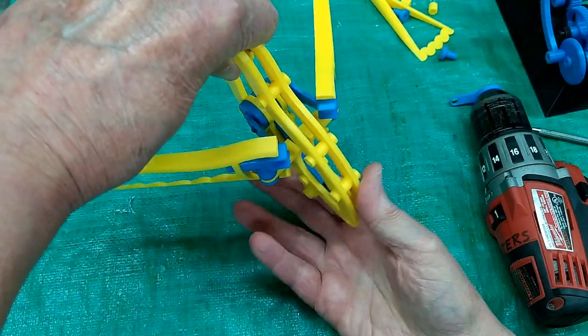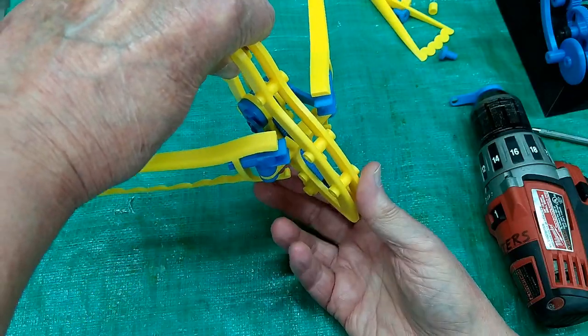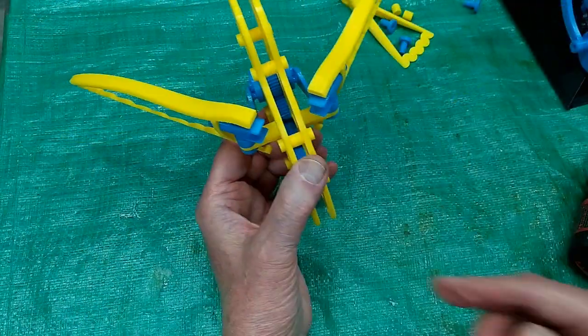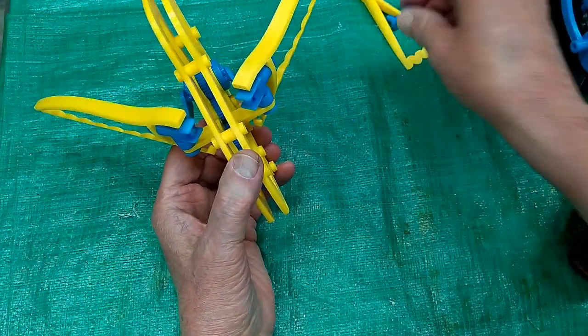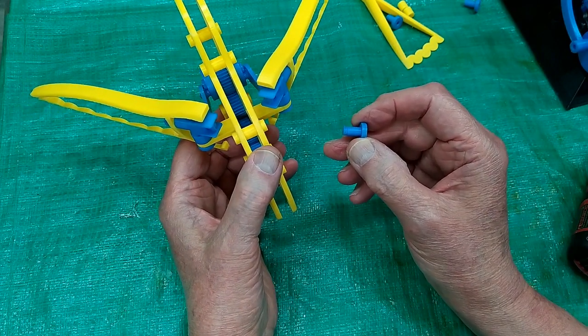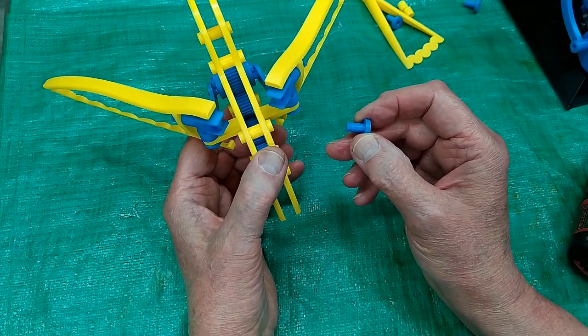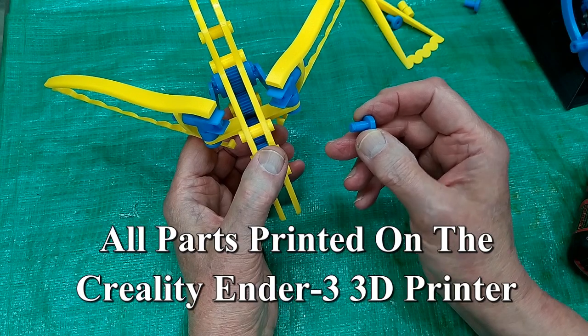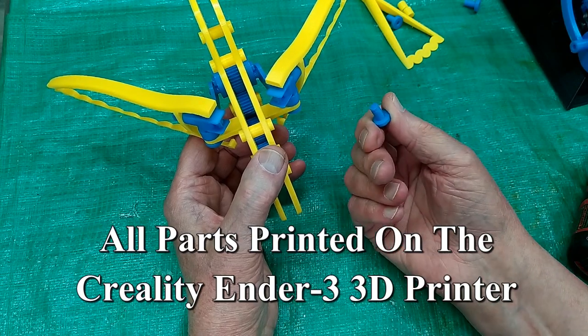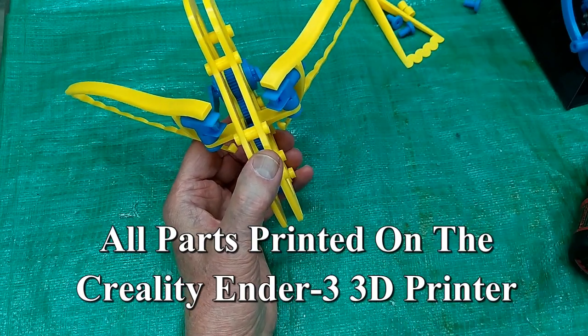One thing I have changed: all the fasteners are printed at 100% infill and on my printer, 0.12 millimeter layer height.